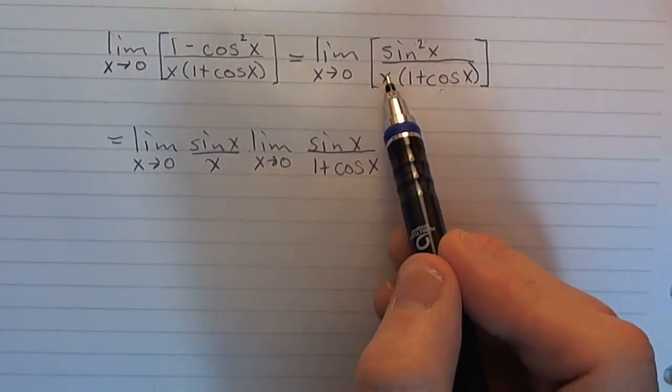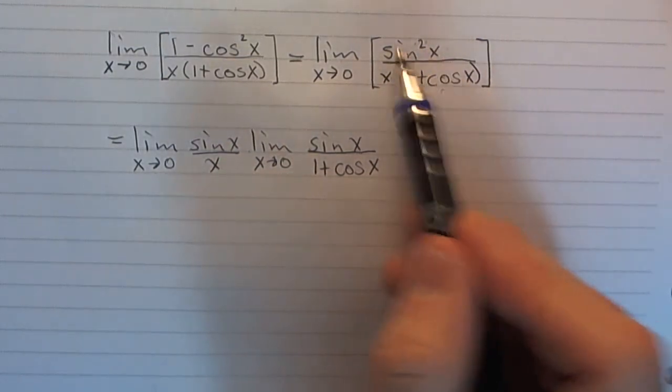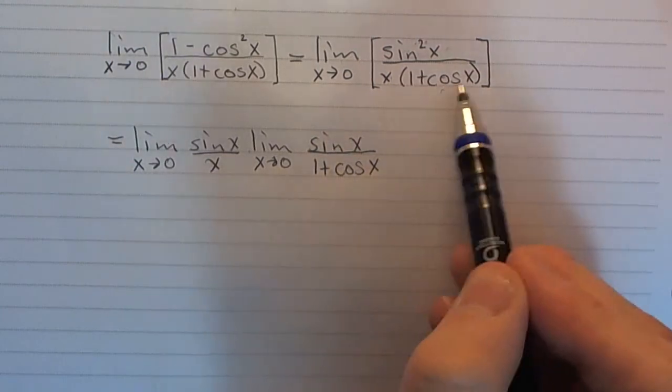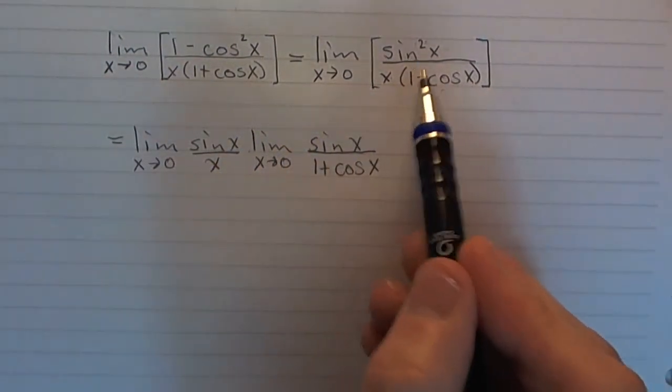I put sine x over x, and then I still have one, I still have a sine x over 1 plus cosine x. Now, notice, if I multiply these out, I get this back.